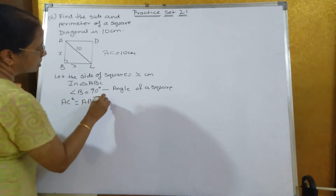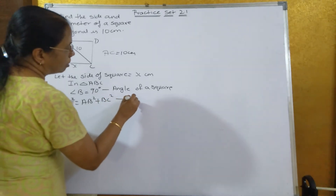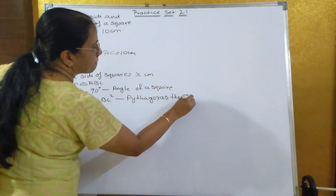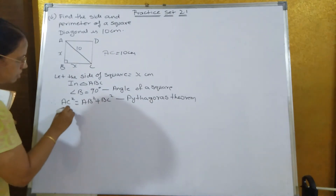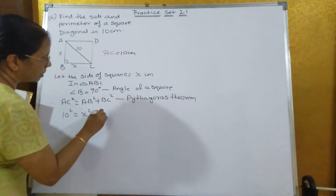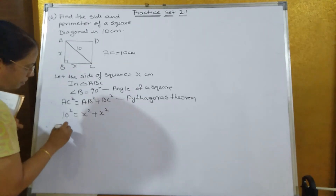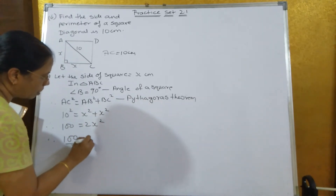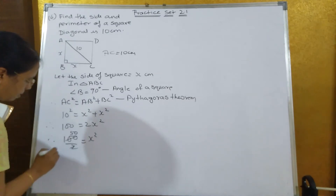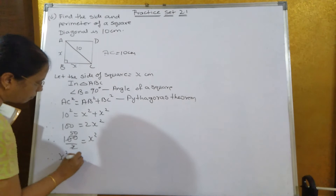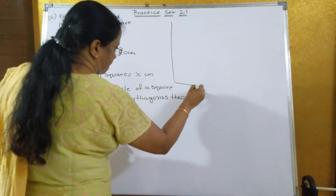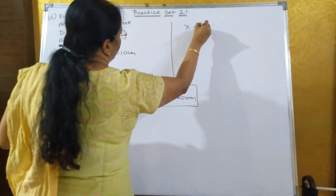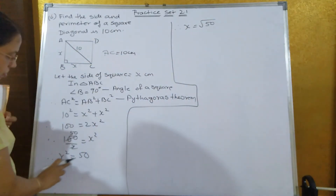Therefore, by Pythagoras theorem, AC squared is equal to AB squared plus BC squared. AC is 10, so 10 squared equals x squared plus x squared. Therefore 100 equals 2x squared, so 100 divided by 2 equals x squared. Cancelling gives x squared equal to 50.